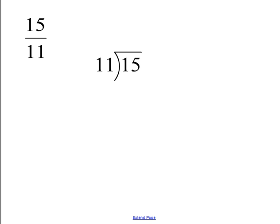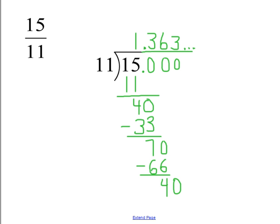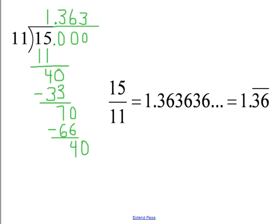In the next example, we have an improper fraction 15 over 11. 15 divided by 11, if we do the long division, we get 1.363636. We start getting the same remainders over and over. This is an example of a repeating fraction.